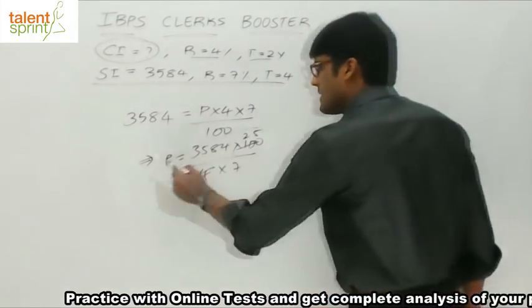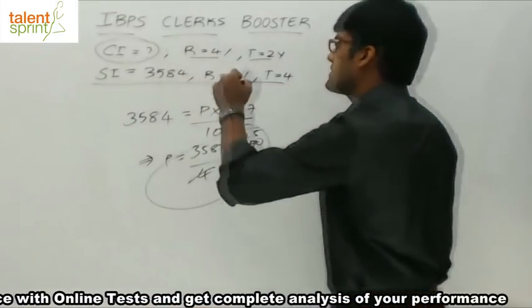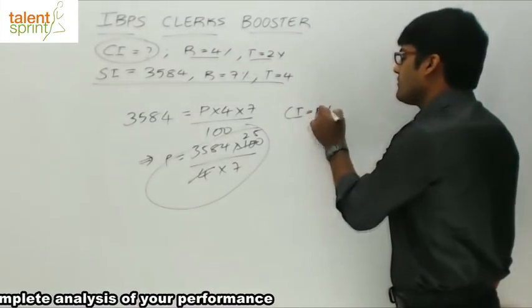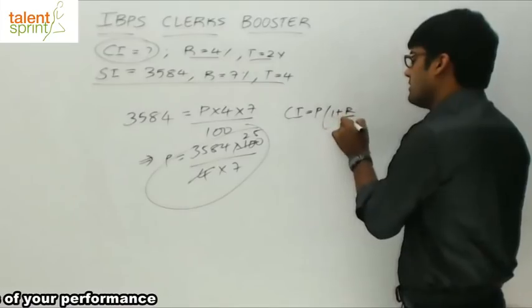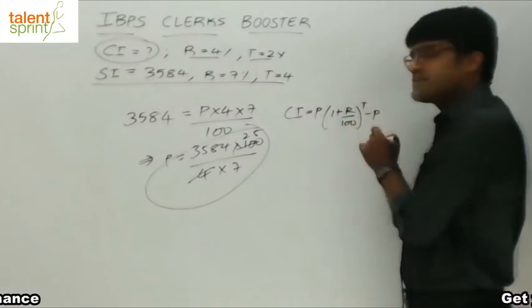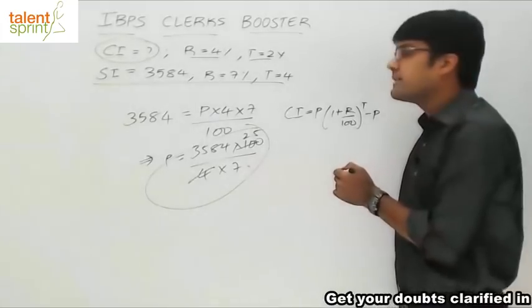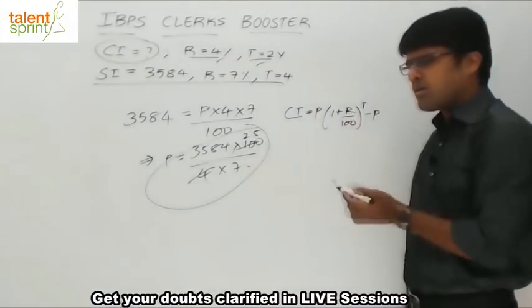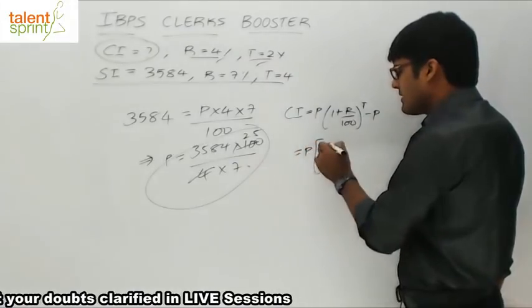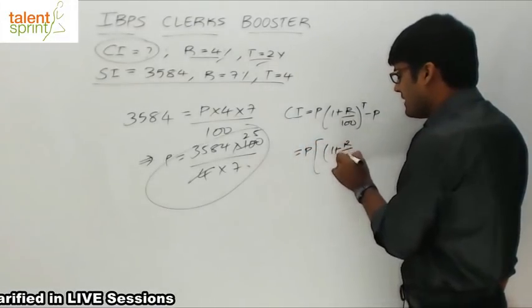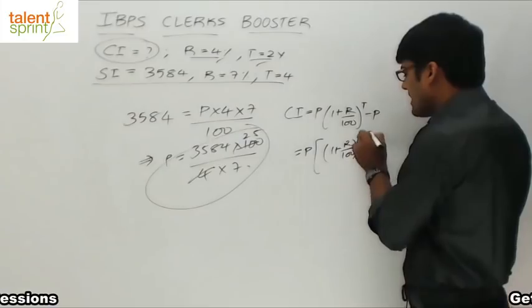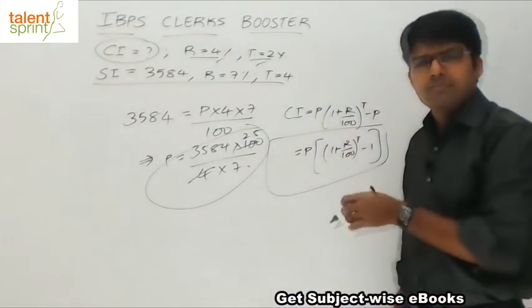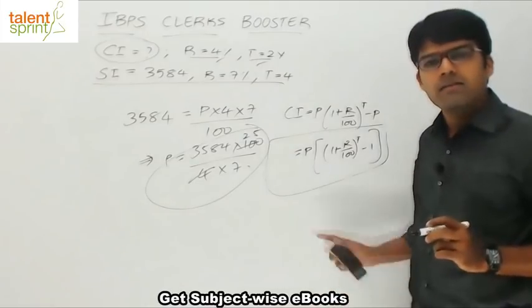Once you have got the principle amount, then you will use the compound interest formula. What is the compound interest formula? CI will be equal to P of 1 plus R by 100 whole raised to the power of T minus P. You know the new principle, the value that we have calculated here. R and T are given, 4 and 2. Substitute. Or you can take P common here. If you take P common, what happens? We will get 1 plus R by 100 whole to the power of T minus 1. So substitute the three values P, R and T in this equation. Simplify it and get the required answer. You will get the right answer.